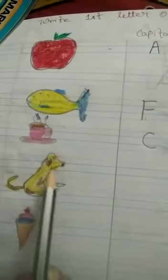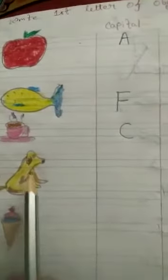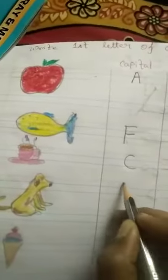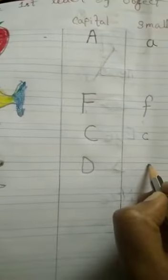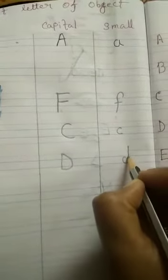Next one is dog. Doggie. D for dog. Next one is D. This one is capital D. And then right is small d.